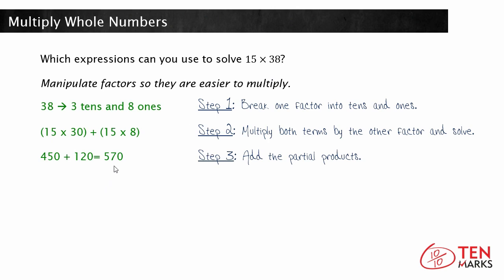Now you're going to use the other factor 15 and break 15 down into tens and ones and multiply it by 38. 15 broken down into tens and ones is 10 and 5, so 38 times 10 plus 38 times 5.